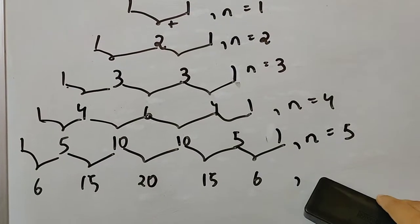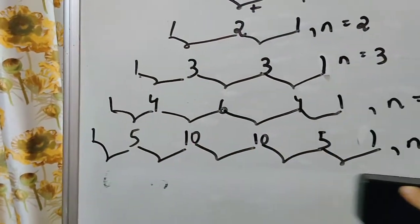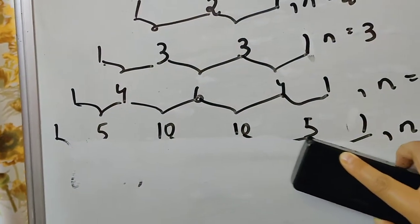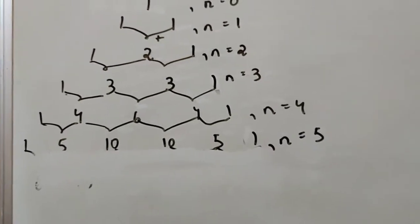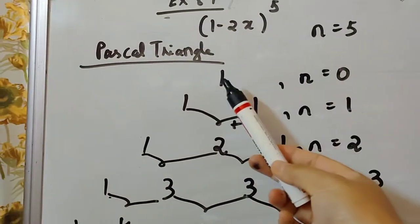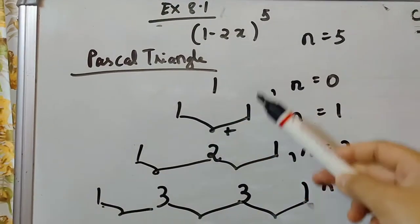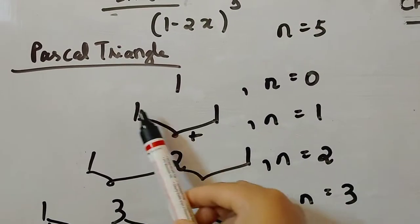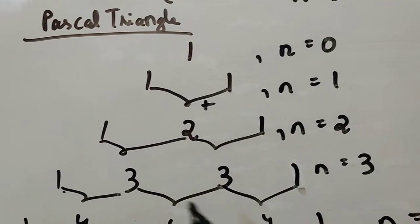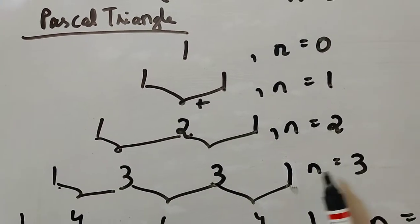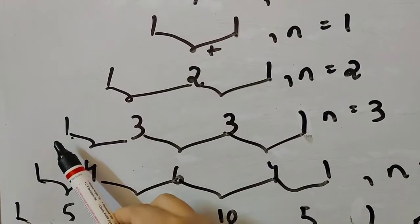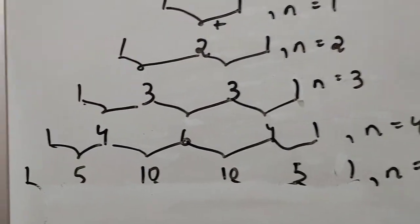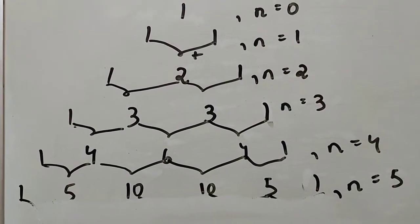We only need up to n equals 5, so the row for n equals 5 is 1, 5, 10, 10, 5, 1. The row for n equals 6 is not needed so we can remove it.